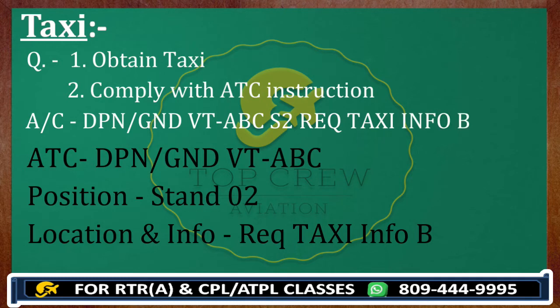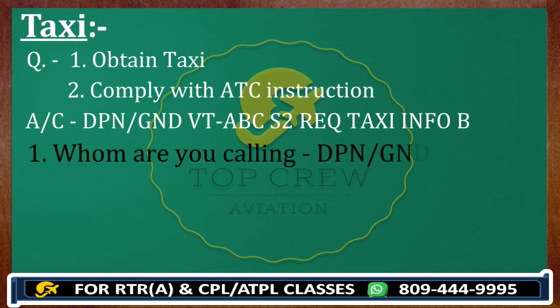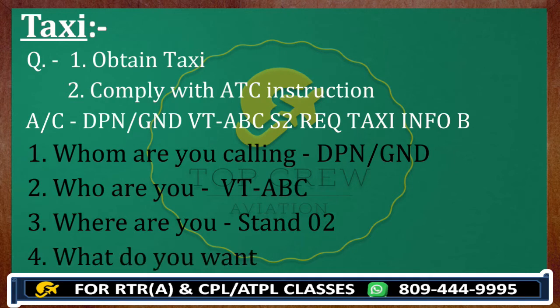In this call we are fulfilling all the required elements: whom you are calling — that is Delhi Ground; who are you — Victor Tango Alpha Bravo Charlie; where are you — Stand 02; and what do you want — request taxi. So wherever we make calls, we always answer four questions: whom, who, where, and what.